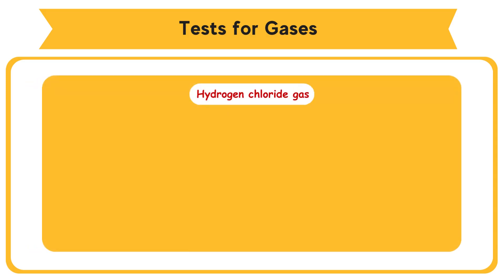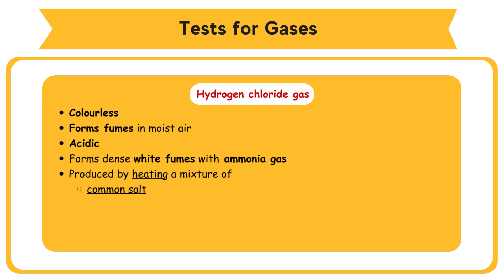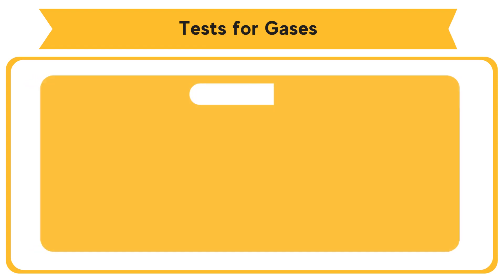Hydrogen chloride gas is a colorless gas that forms fumes in moist air. It is an acidic gas and forms dense white fumes with ammonia gas. It is produced by heating a mixture of common salt and concentrated sulfuric acid: H2SO4 (aqueous) + NaCl (solid) → NaHSO4 (aqueous) + HCl (gas).